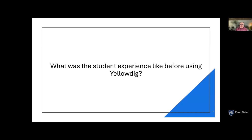I found that when you use groups in Canvas, they completely isolate conversations and silo them just for that group, so groups can't see what others are talking about. I used groups mainly to keep discussions manageable, but it made grading difficult and there was even less participation because students weren't seeing what other groups were doing. It ended up just being another writing assignment and not really a conversation — last-minute posting, no way to set up double deadlines. Yellowdig really took care of all of that.